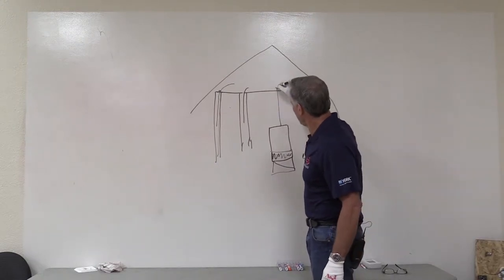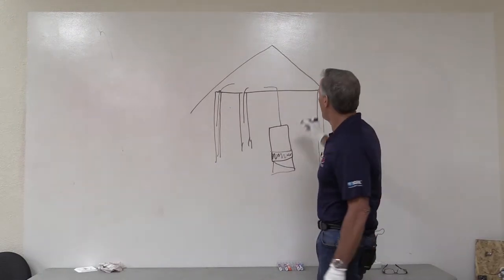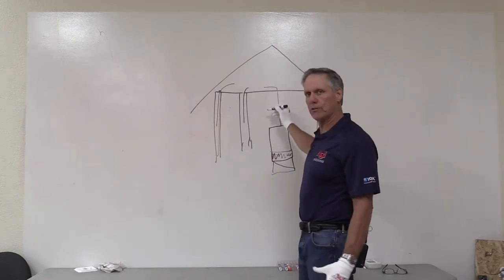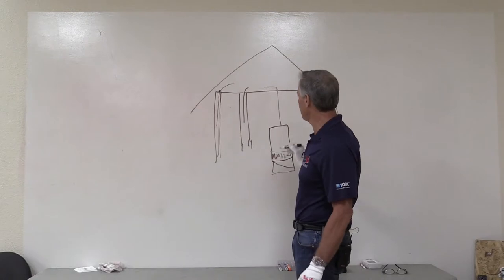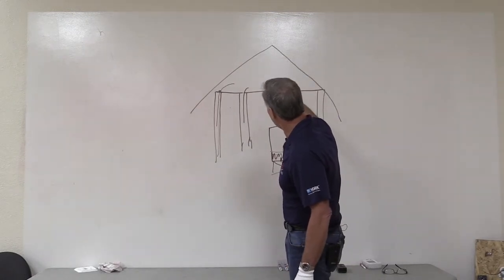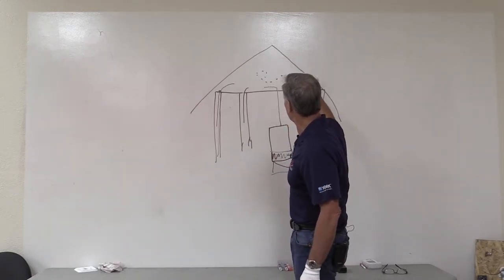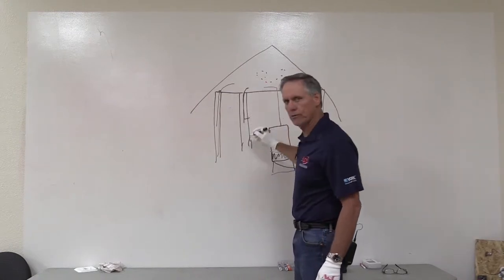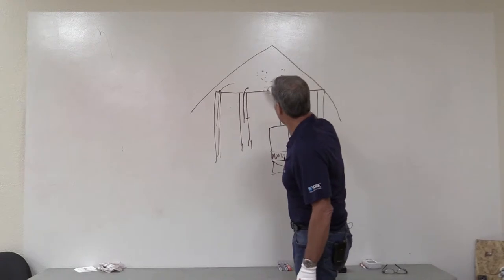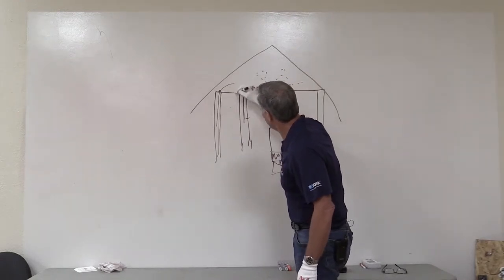But what happens is when the system turns on, oftentimes your house has a negative pressure on it because of duct leakage and a variety of other reasons. What happens then is all the polluted air, all the little bit of pollutants, they make their way down the walls through light switches, through switch cans, and all these different areas.